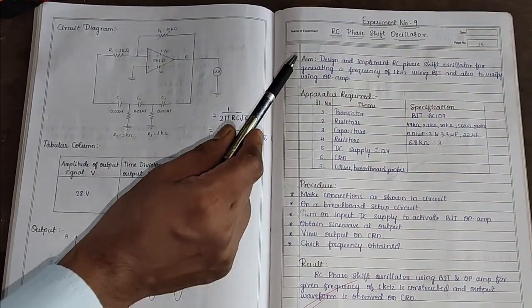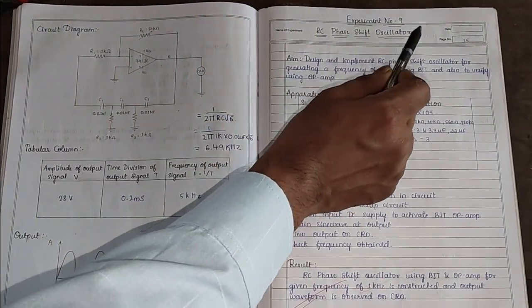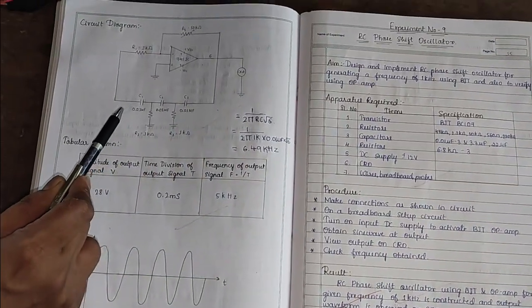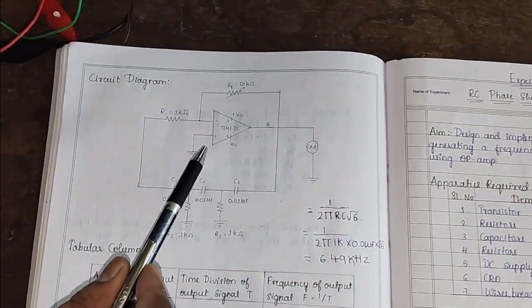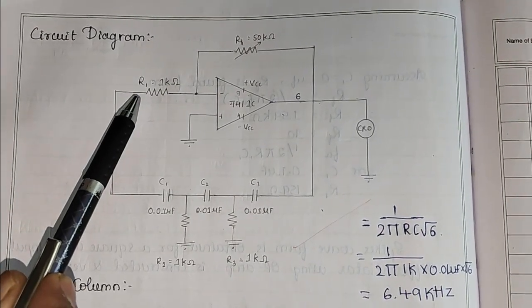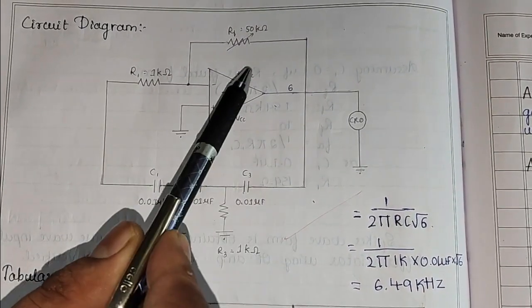In this video I will explain about RC phase shift oscillator using op-amp 741. This oscillator consists of op-amp 741 IC and one resistor R1 at input and one feedback resistor.